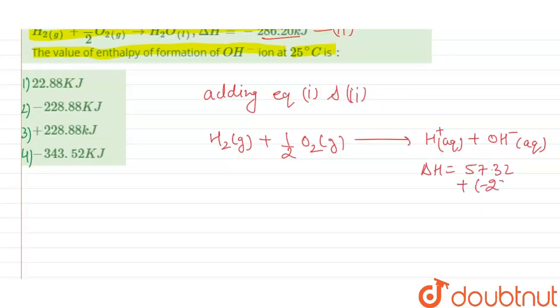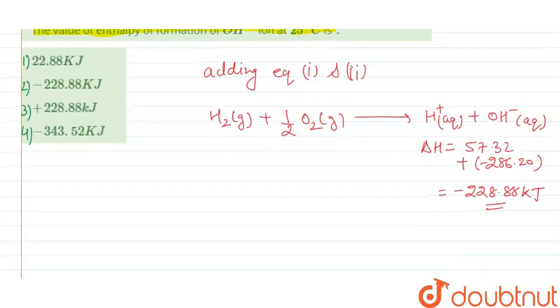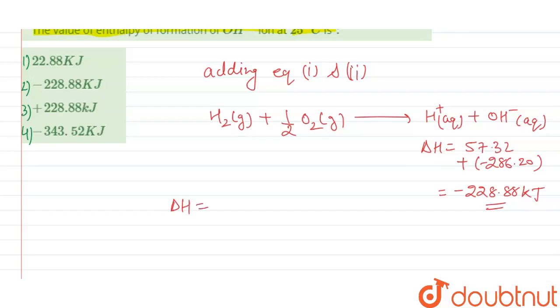Now we know that the heat change in the reaction, delta H, will be equal to the heat of formation of product minus heat of formation of reactant.